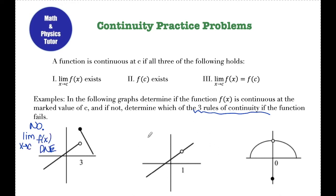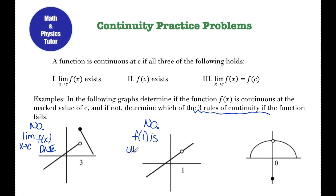In this second graph I can see right away that this function is not continuous at x equals 1 because of this hole. The piece of the definition that's failing here is part 2 — f of C does not exist. In this case, f of 1 is undefined, so no, this function is not continuous.